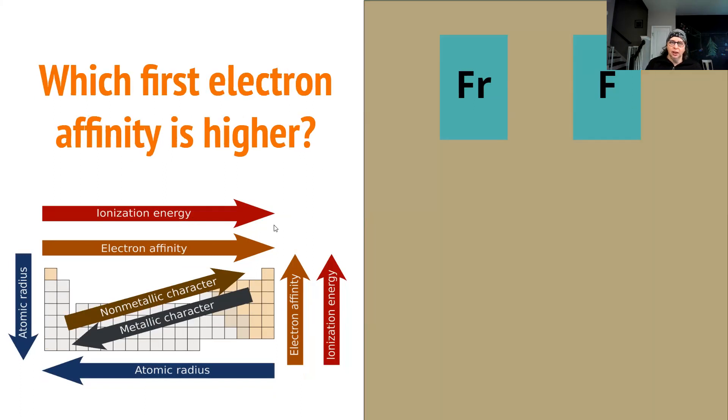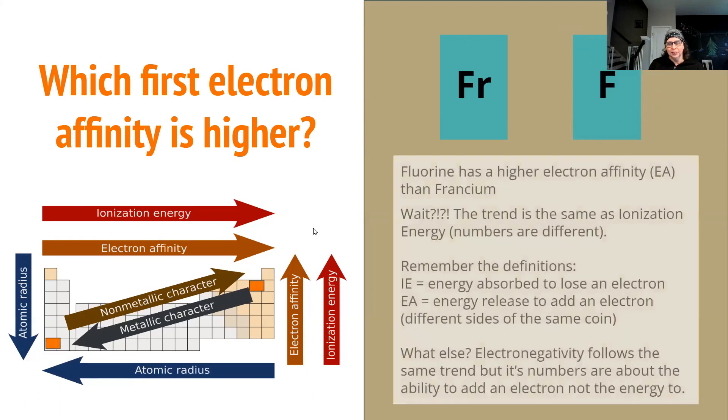Which electron affinity, first electron affinity is higher? Fluorine and francium again. And again, it is fluorine. It is the same trend. The same arrows are going the same direction. Electron affinity is basically the opposite of ionization energy. Electron affinity is how much energy is going to be released when we add an electron.